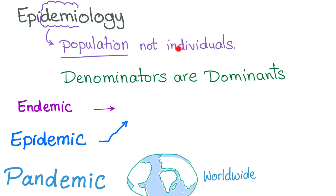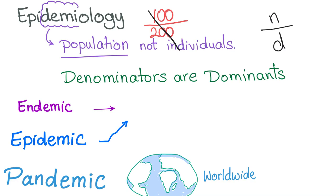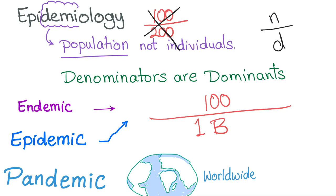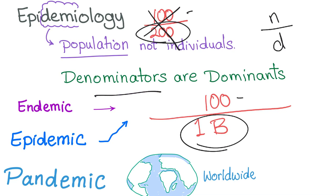Epidemiology deals with the population, not individuals. Denominators are dominant — denominators are way more important than the numerator. For example, let's say there is a country with 100 cases of AIDS. Is this good or bad? It depends. If the total population of your country is only 200 people, you are in a terrible position — that means half of your population has AIDS. On the other hand, if you have 100 cases of HIV-AIDS in a population of 1 billion people, it's less bad than the first scenario. The 100 was the same; what differed was the denominator. That's why denominators are the kings.